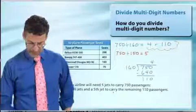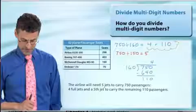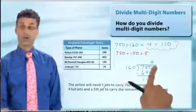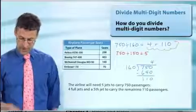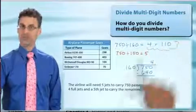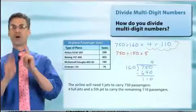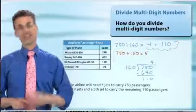And so here's what we've got so far. We'll need to have five jets to carry the 750 passengers. Four of them are going to be filled to capacity. And the fifth one is going to carry the extra 110 remaining passengers, hence the remainder. Now, there was a little bonus to this question. Remember what it was? It asked, how many empty seats would there be?